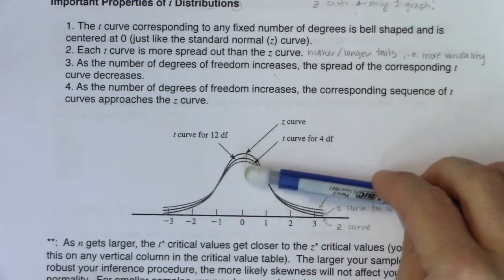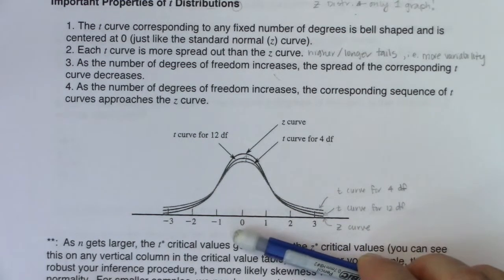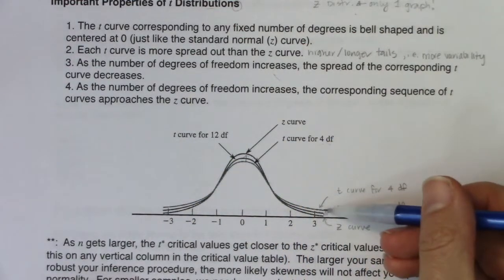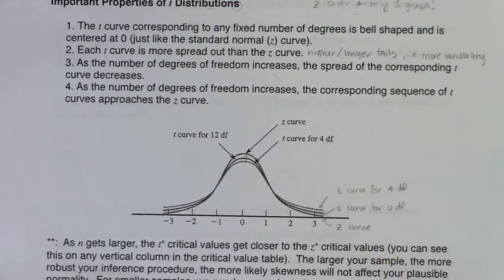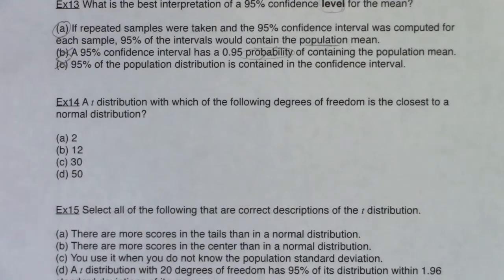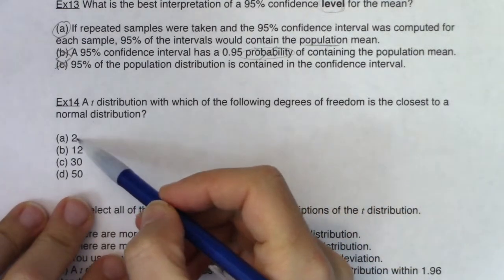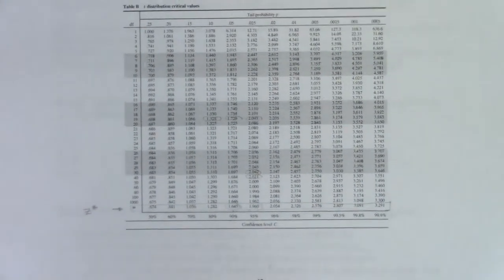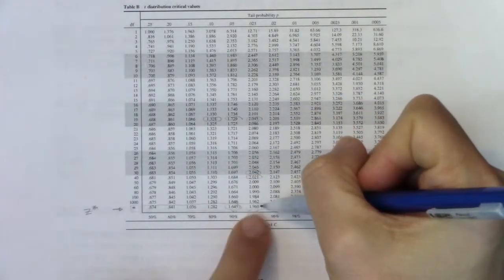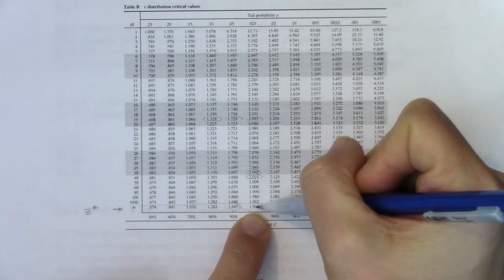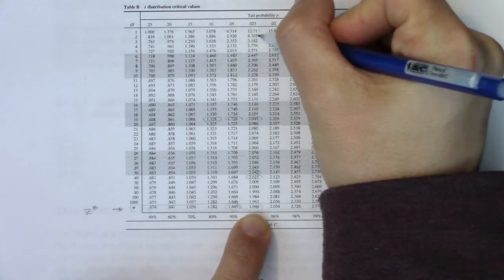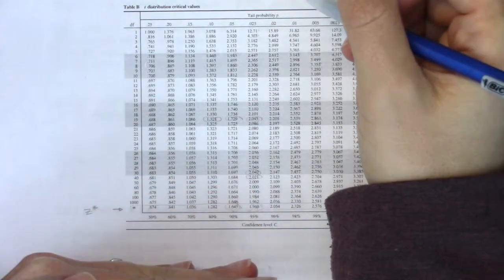As degrees of freedom increase, your tails get smaller and your peaks get taller and taller, and they converge — they get closer and closer to the standard normal curve. That's what they're asking: when is it closest to the standard normal curve? At 2 degrees of freedom, it's not close at all. We can also see this in our critical value table. If we go with 95% confidence as the industry standard, the critical value for the standard normal curve is 1.96. At 2 degrees of freedom it's way up at 4.303 — not even close — because that tail is so much higher than the standard normal curve tail.